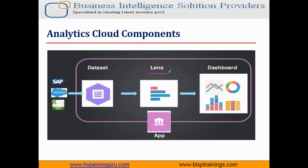Next we have Lenses. A lens is a particular view into a data set — it's where we do exploratory analysis and visualization, or it is basically a single report based on the data set in Analytic Cloud. In lenses we can build a bar graph, a line graph, a pie graph, or any of the available graph types. We can design and prepare reports within lenses by extracting data from the data set.